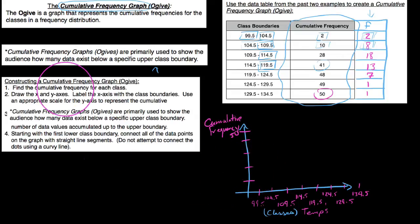Essentially we're going to take the cumulative frequency in each class and we're going to draw a dot for that one. So we say start with the first lower class boundary, the lower class boundary is 99.5.